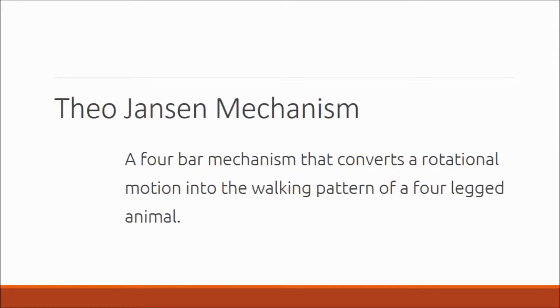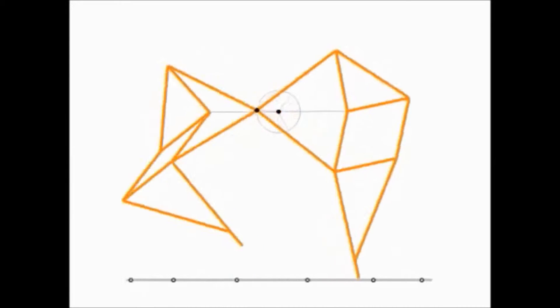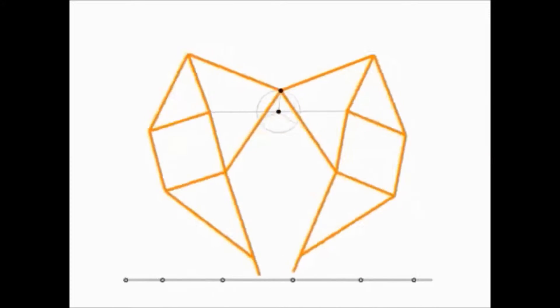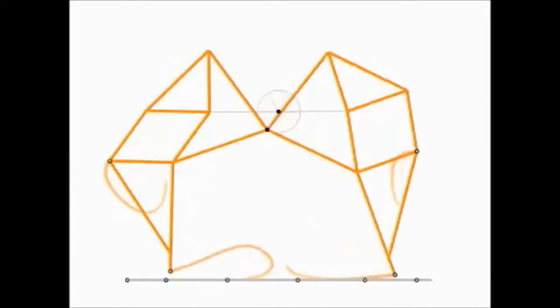The mechanism chosen for the locomotion is the Tao-Hanson mechanism. It is a four-bar mechanism that converts rotation into a walking pattern. This animation illustrates the mechanism in action, where a rotating crank is driving a pair of legs.